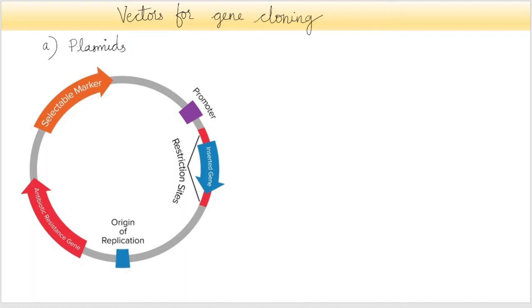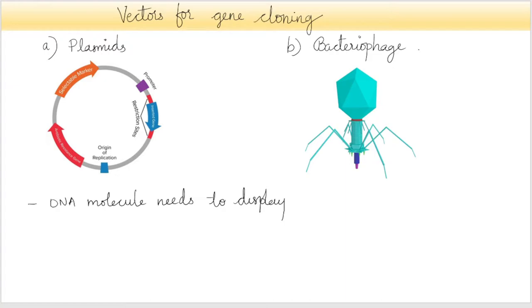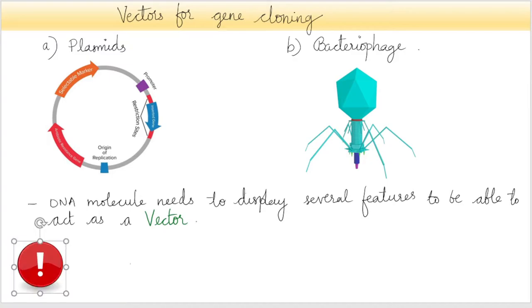In this video we'll be talking about the vectors for gene cloning, that is plasmids and bacteriophages. A DNA molecule needs to display several features to be able to act as a vector for gene cloning.